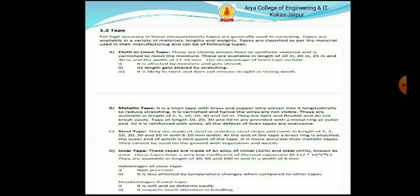Metallic tape: it is a linen tape with brass and copper wires woven into its length to reduce stretching. It is varnished and hence the wires are not visible. These are available in lengths of 5, 10, 20, 30 and 50 meters. These are light and flexible and do not break easily. Tapes of length 10, 20, 30 and 50 meters are provided with a metal ring at outer end. As it is reinforced with wires, all the defects of linen tapes are overcome.